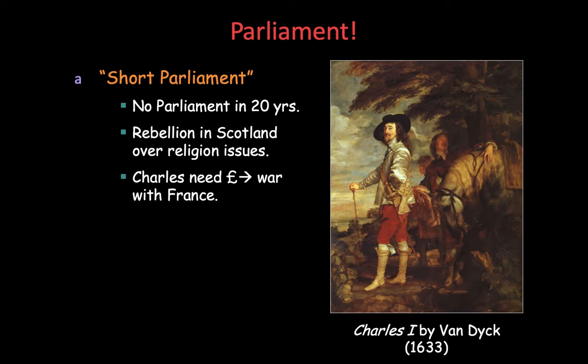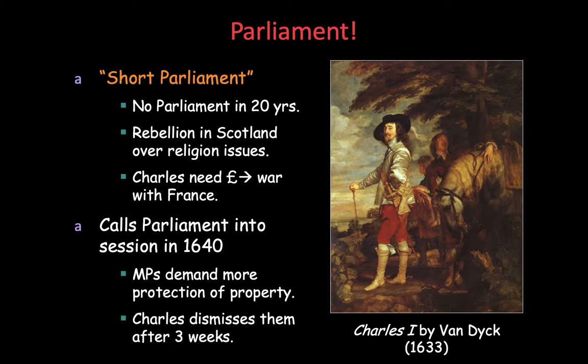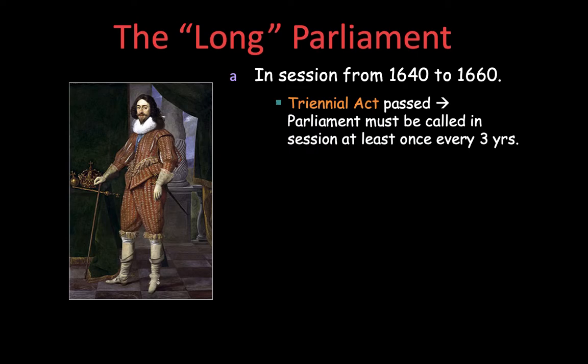There is a rebellion in Scotland. Charles needs money because he wants to go to war, and he's got Parliament in session in 1640. The members of Parliament want more protection of property, Charles will not agree, and he has to dismiss them. Parliament finally comes into session in 1640 because Scotland invades England. The conflict is really about the Anglicans of England versus the Presbyterians of Scotland, and the Parliament is filled with Puritans who don't like Charles I.